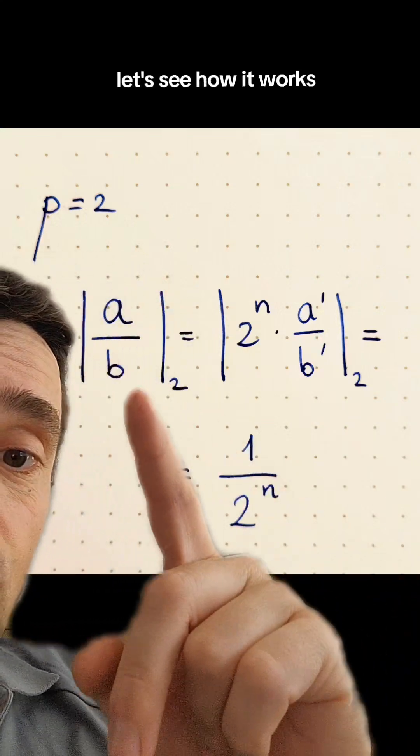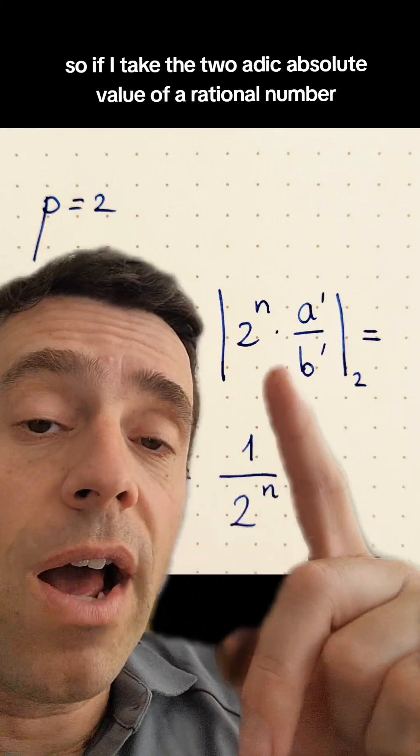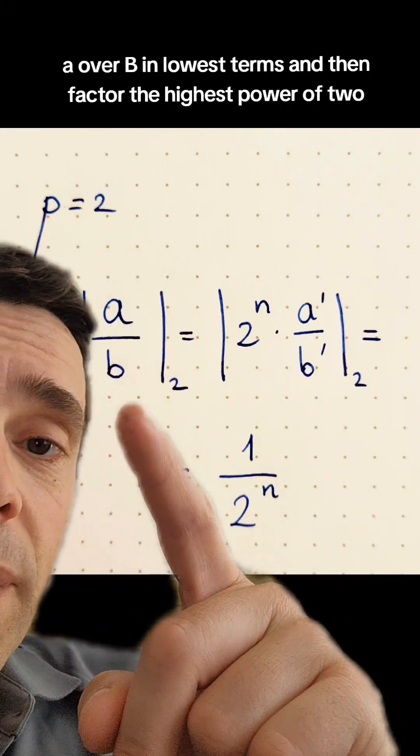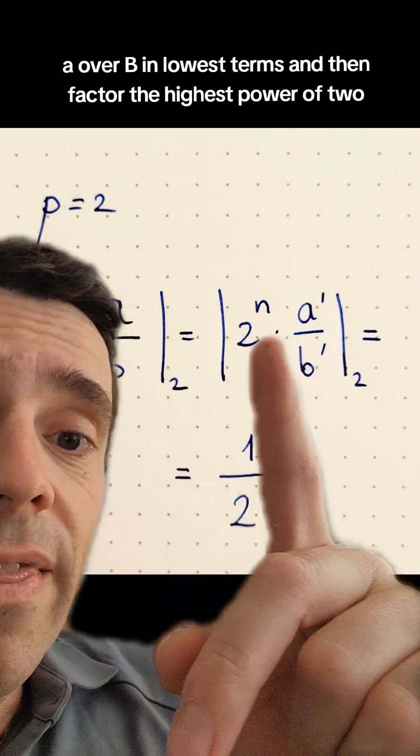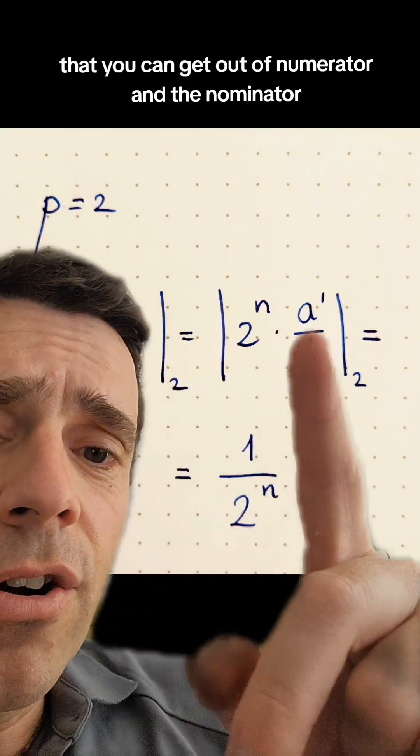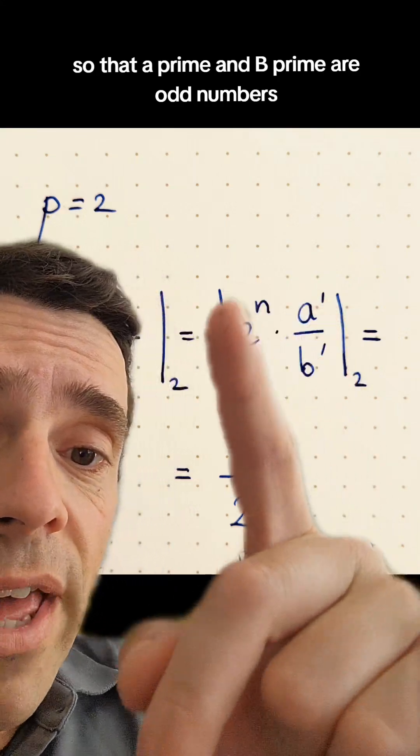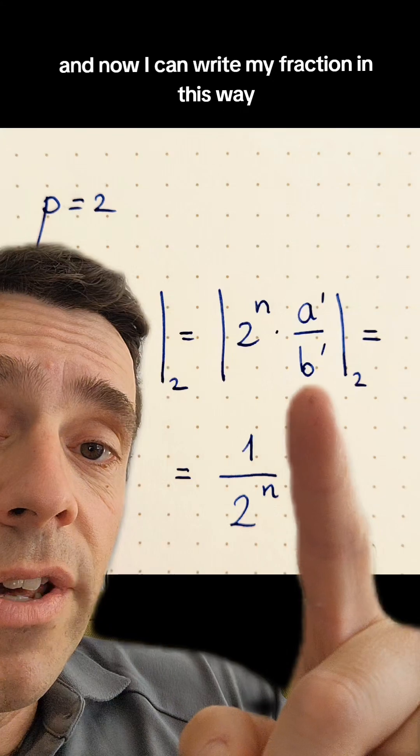Take P to be 2 here, let's see how it works. So if I take the 2-adic absolute value of a rational number, I do the following. Write A over B in lowest terms, and then factor the highest power of 2 that you can get out of numerator and denominator so that A-prime and B-prime are odd numbers. And now I can write my fraction in this way.